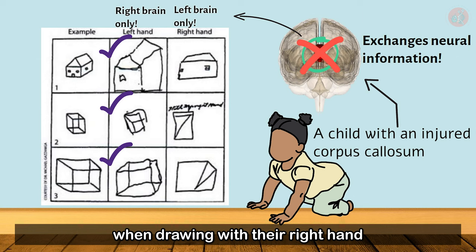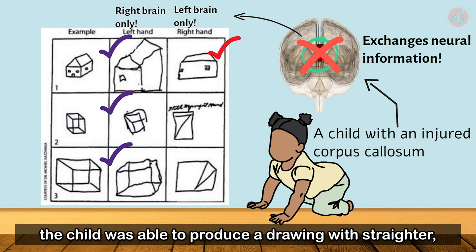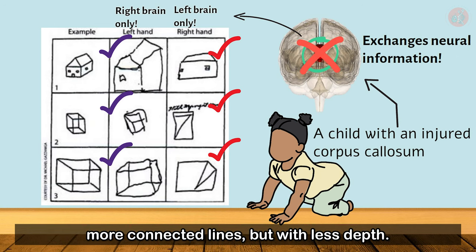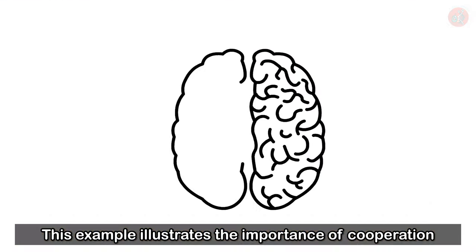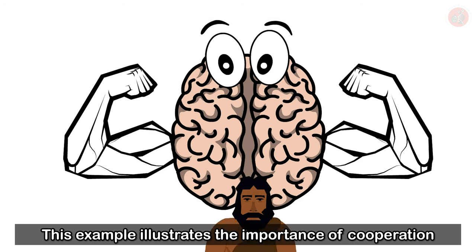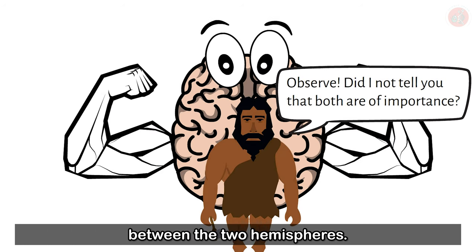On the other hand, when drawing with their right hand, the child was able to produce a drawing with straighter, more connected lines, but with less depth. This example illustrates the importance of cooperation between the two hemispheres.